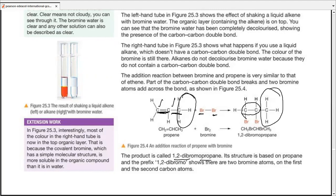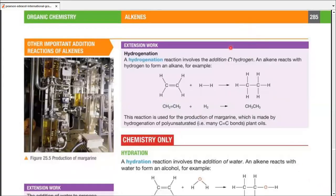Now, in figure 25.3, interestingly, most of the color in the right-hand tube is now in the top organic layer. This is because the covalent bromine, which has a simpler molecular structure, is more soluble in organic compound than it is in water. Actually, we have mixed organic compound in water. Water was present as a part of bromine solution. Organic compound is the compound that we use as solvent to perform this experiment, as mentioned. So, moving on, let's clear it out. Extension work. Another kind of addition reaction, hydrogenation. As the name suggests, it means addition of hydrogen.